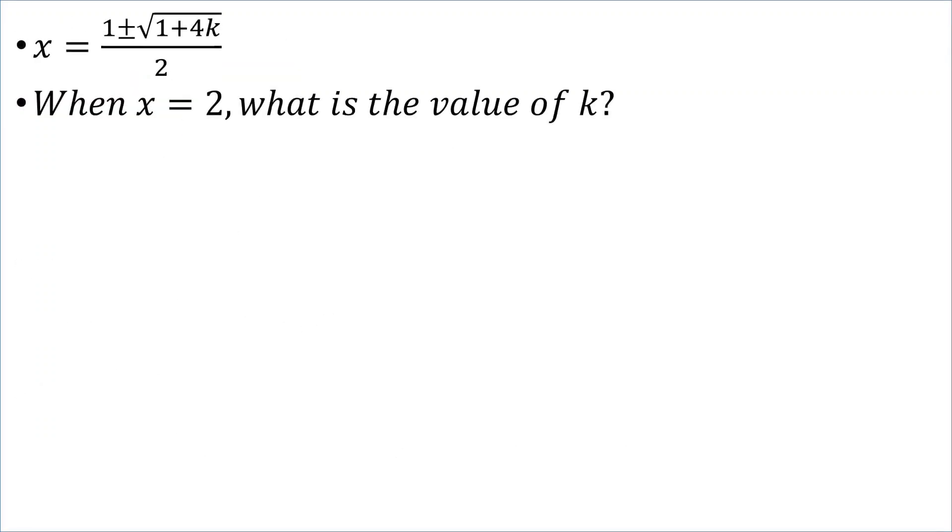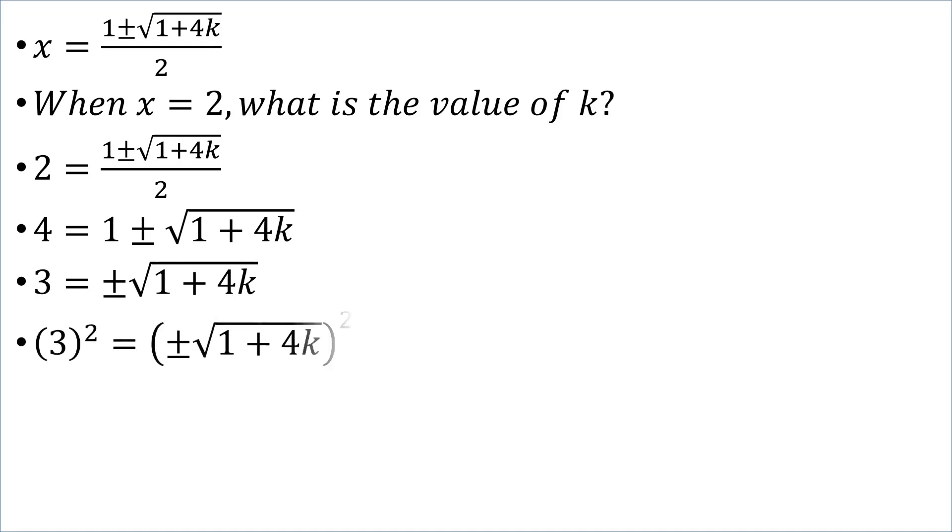So, when x is equal to 2, we'll let 2 go in place of the x and then solve for k. First, transposing, we'll have 2 times 2 gives us 4. Then, transposing the 1, we'll subtract that from 4, which gives us 3. Then, we want to get rid of the radical. So, we'll square both sides.